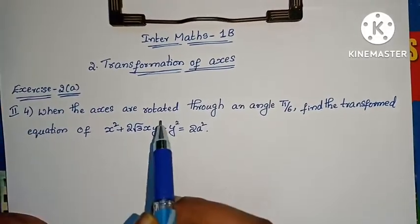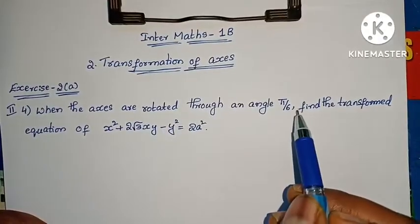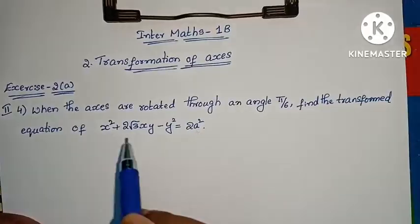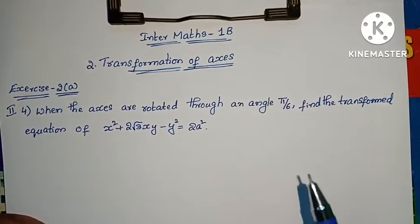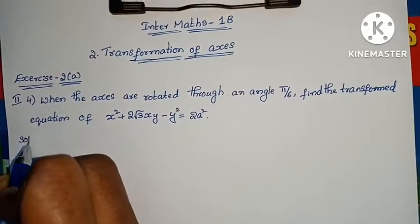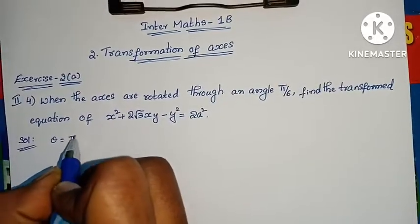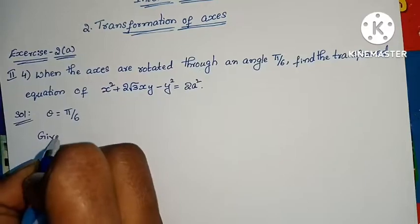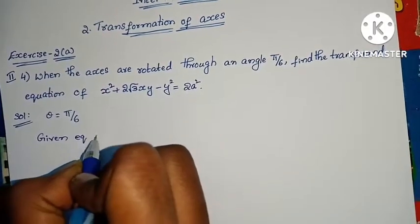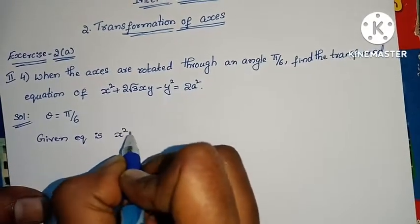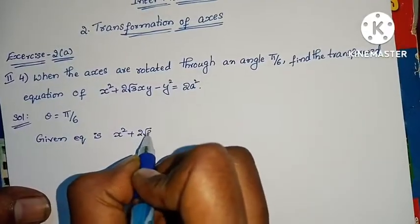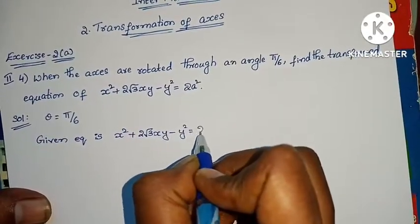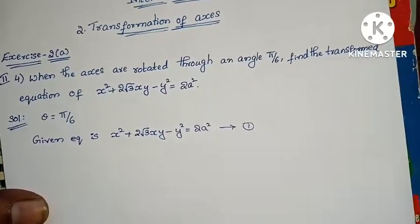Question 1: when the axis is rotated through an angle pi by 6, find the transformed equation. This is the original equation and we can transform the equation. It is very simple. Theta equals pi by 6 — given. The equation is x square plus 2 root 3 xy minus y square equals to 2a square. Let it be equation 1.